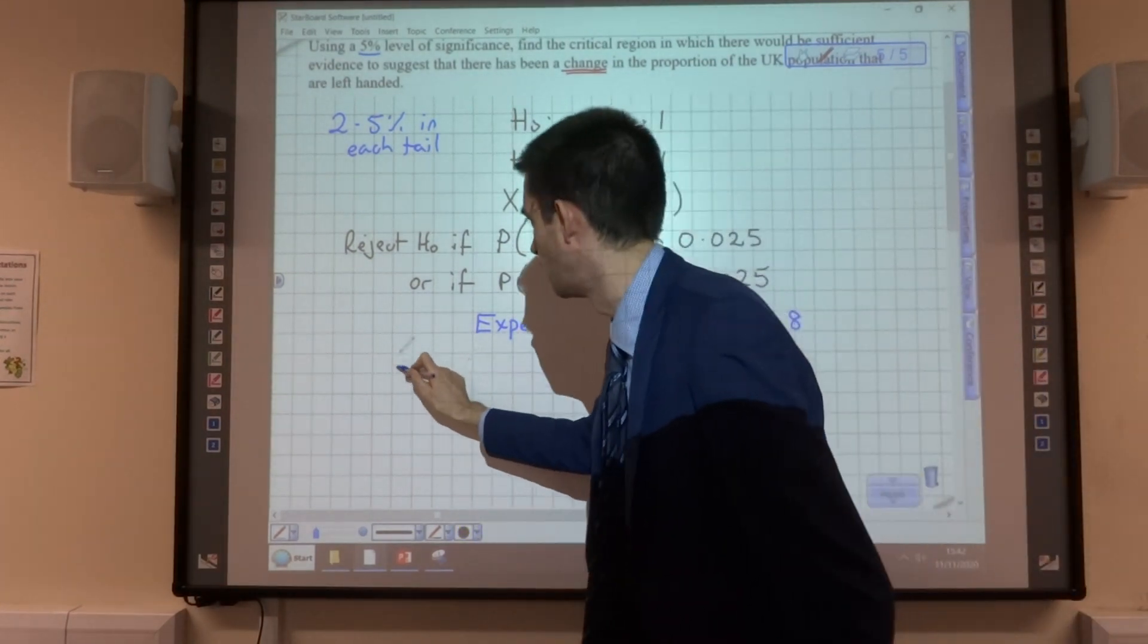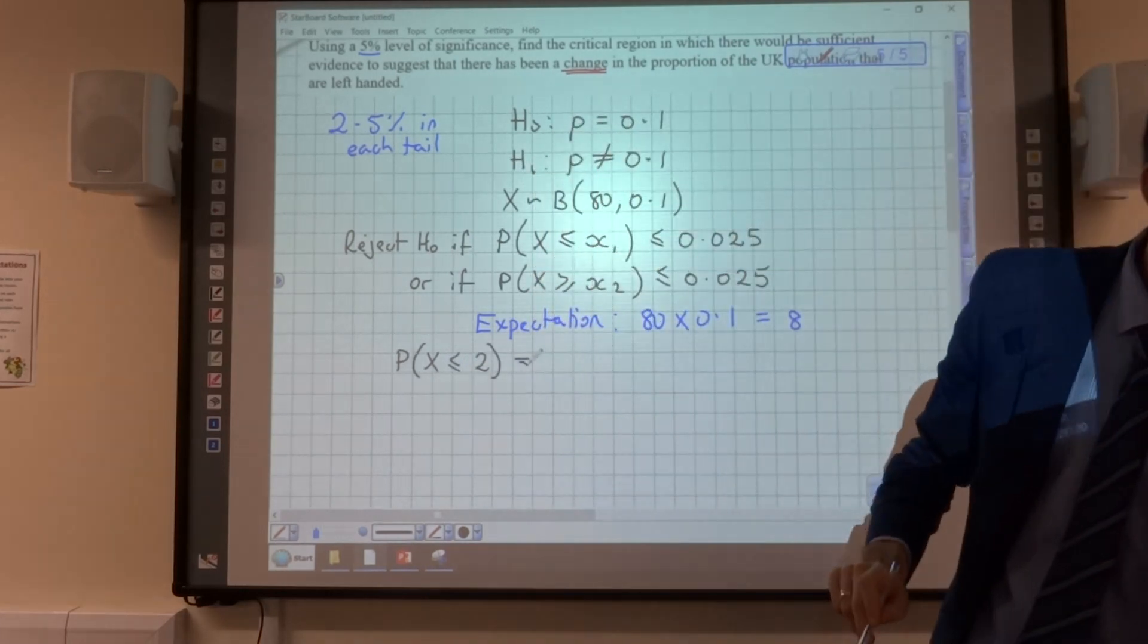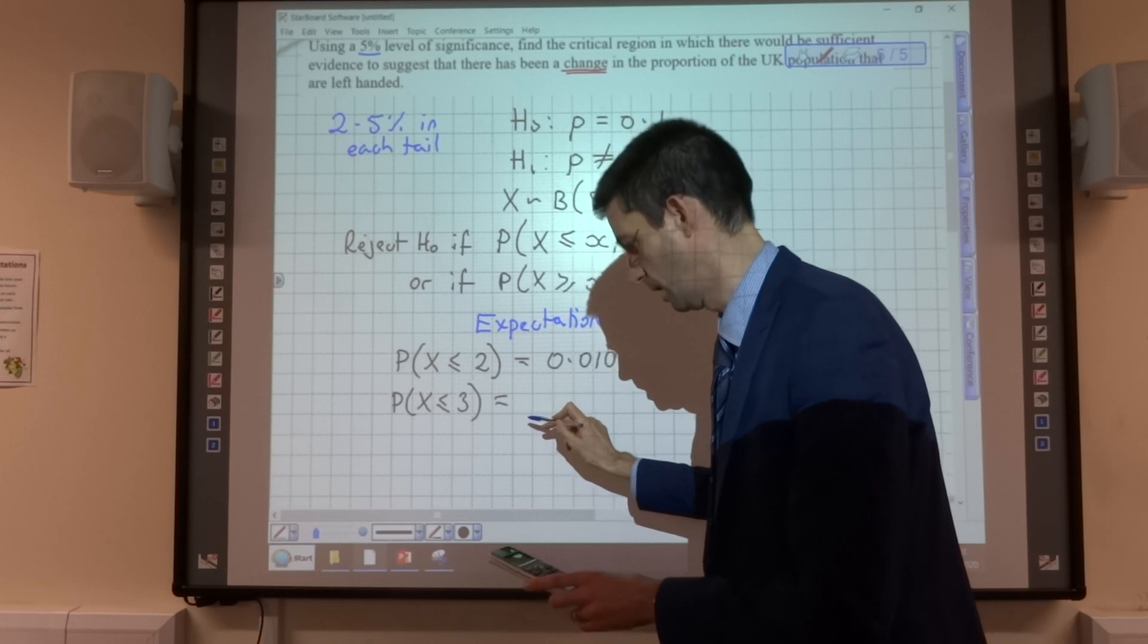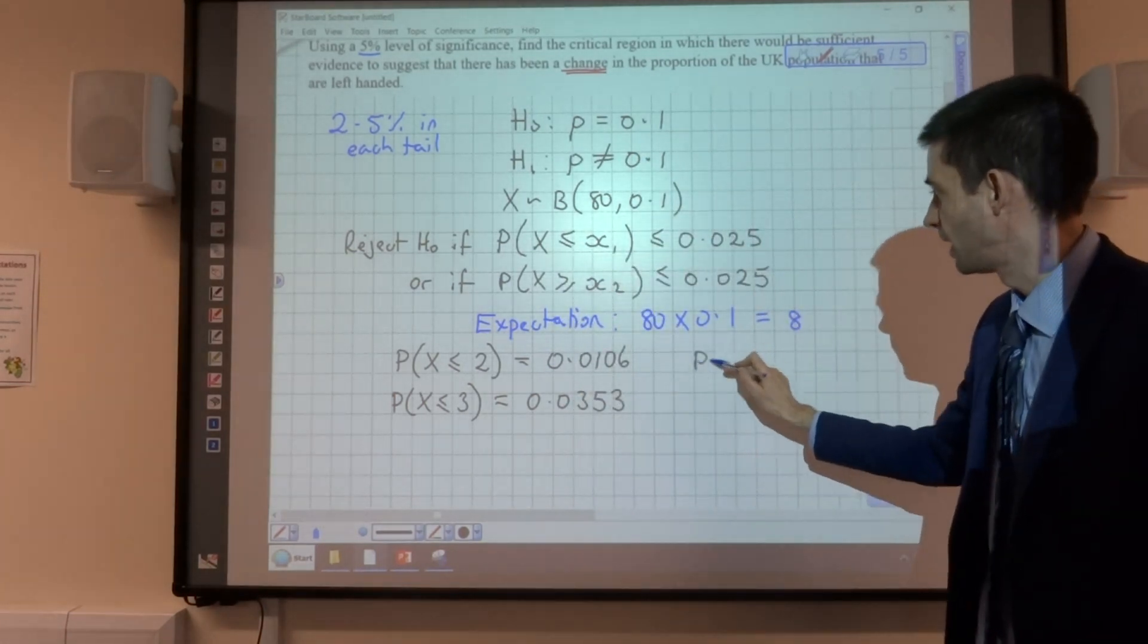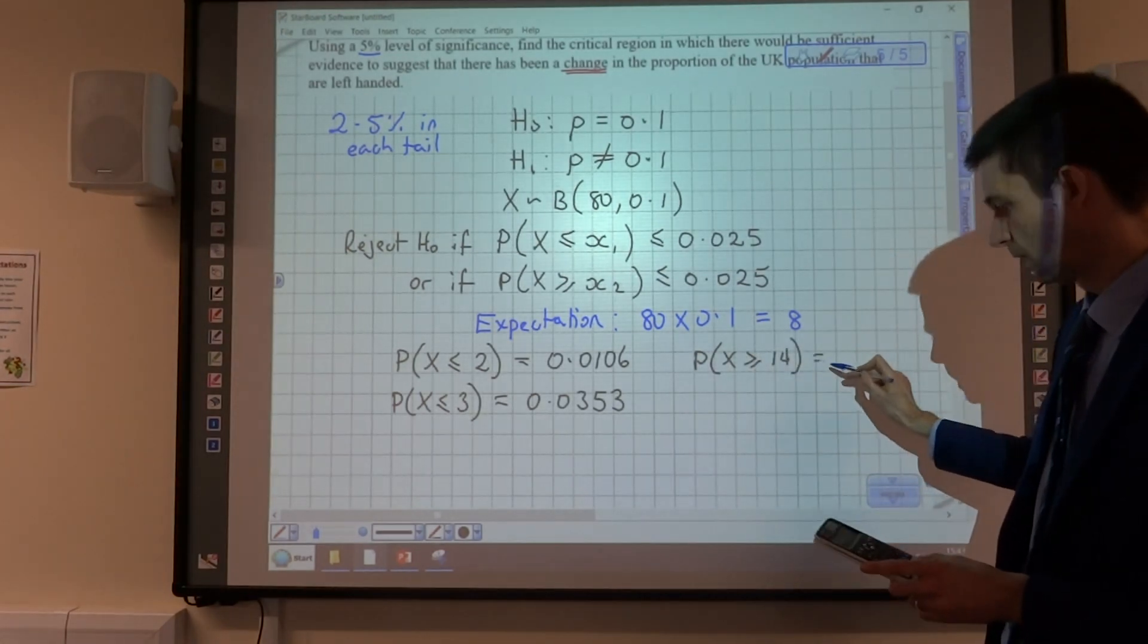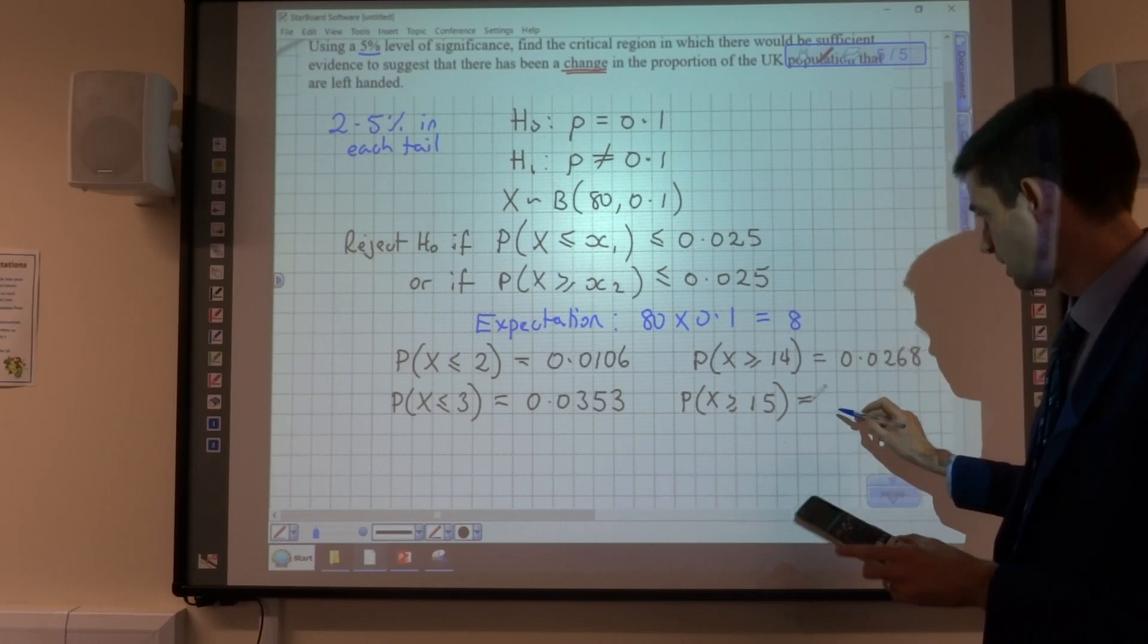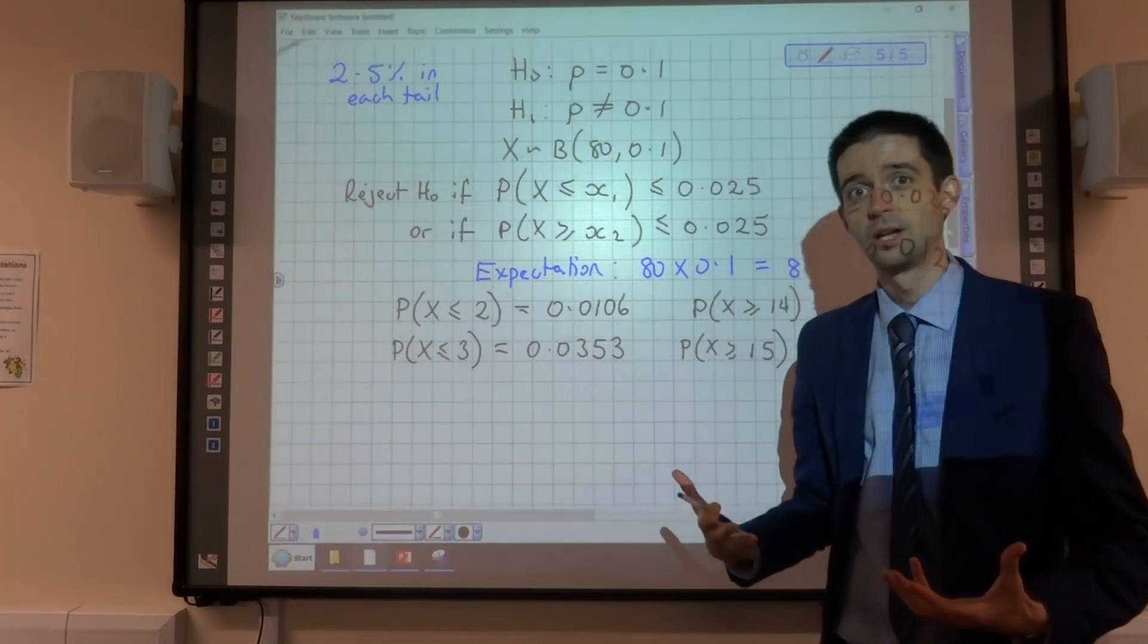I've calculated a few of these values earlier on, and I've got the probability that X is less than or equal to 2 to be 0.0106. I've got the probability that X is less than or equal to 3 to be 0.0353 at the lower end. And then at the upper end, I've got the probability that X is greater than or equal to 14 to be 0.0268 and the probability that X is greater than or equal to 15 to be 0.0124.